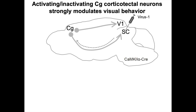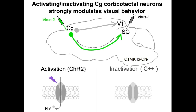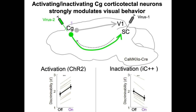We used a dual-virus strategy to label corticotectal neurons selectively with either channelrhodopsin-2 to activate neurons, or inhibitory opsin stGtACR2 to inactivate neurons. Activating these neurons causes strong improvements in performance. Inactivating these neurons causes impairment. This indicates that corticotectal neuron activity is important for visual processing.